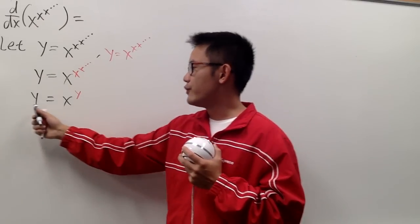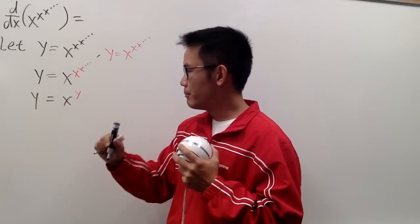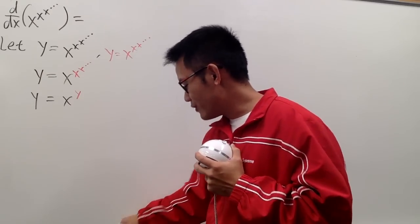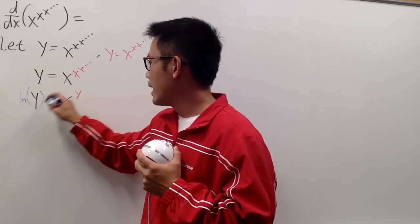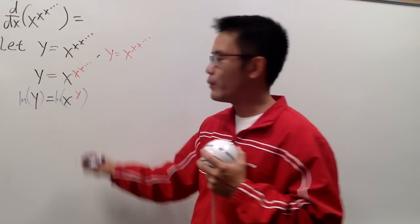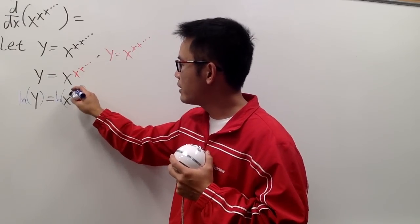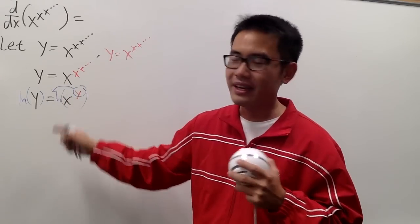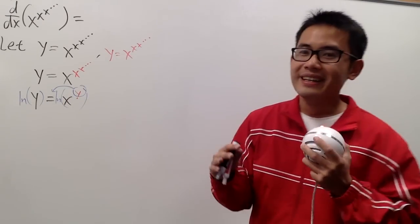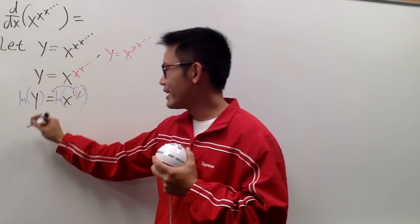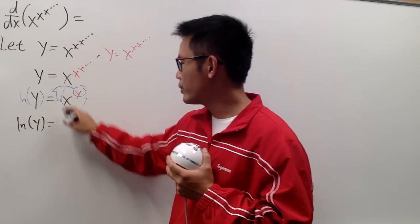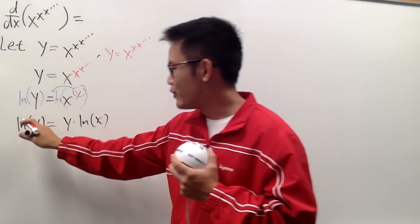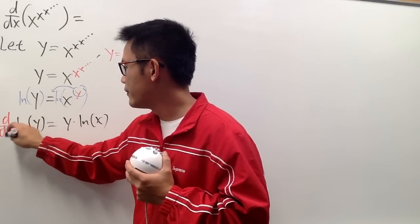And now, to differentiate this, we have a function to a function power. To do the derivative here, we are going to first take ln of both sides. That way, we can bring the power y to the front — and this does not minus 1. This is just the innocent log property; it has nothing to do with the power rule in derivatives. So on the left-hand side we have ln y, and this is equal to y times ln x. Now we are ready to differentiate by implicit differentiation.